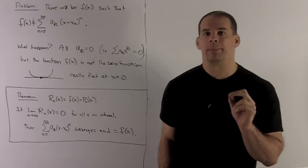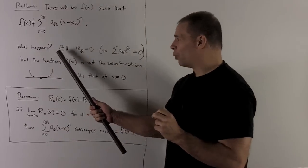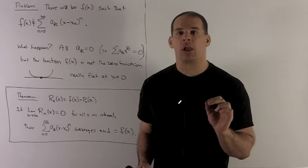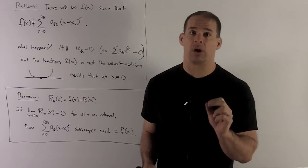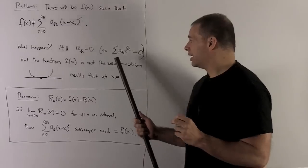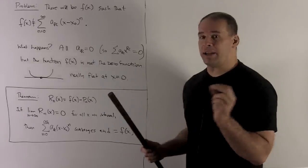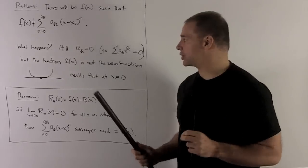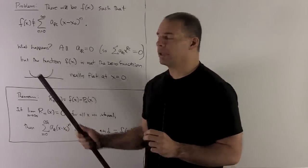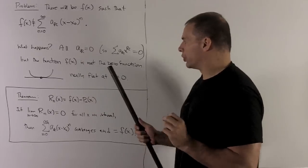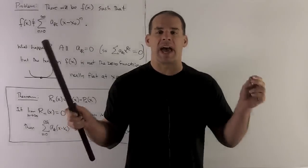The only hitch is that Taylor series may not agree with the original function. So what can happen? In one instance, what can happen is you get all of your Taylor coefficients equal to zero. That's going to mean that the series itself is going to be zero, but this will happen for functions which are not exactly zero.